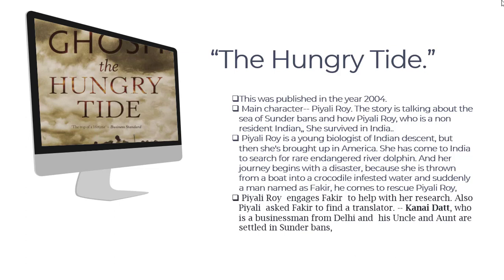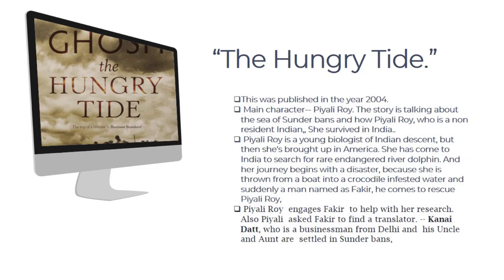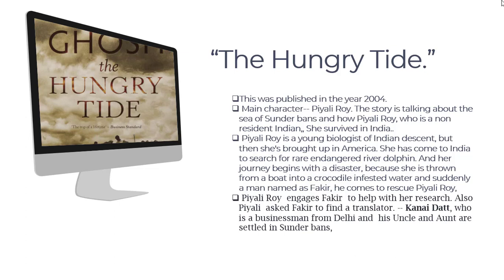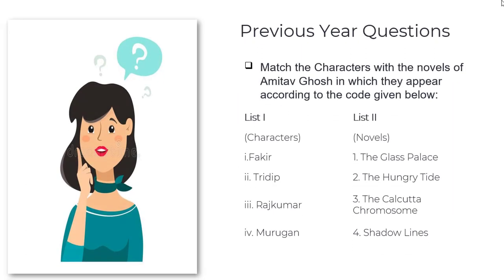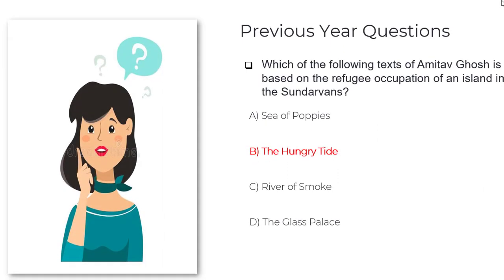In June 2005, an exam question asked who the author of The Hungry Tide is — the answer is Amitav Ghosh. In December 2012, the character-matching question confirmed that Piyali is from The Hungry Tide and Urvashi does not belong to any Amitav Ghosh novel. In June 2014, Fokir was correctly matched with The Hungry Tide. In December 2016, the question was which Amitav Ghosh text is based on a refugee occupation of an island in the Sundarbans — the answer is The Hungry Tide.